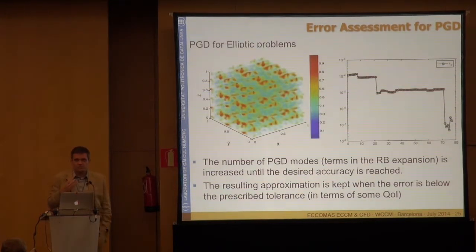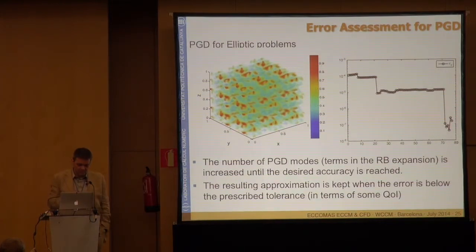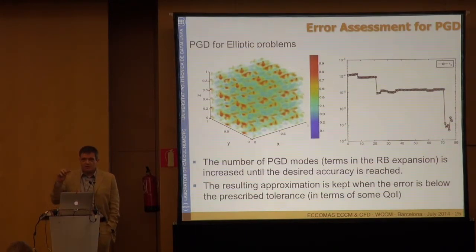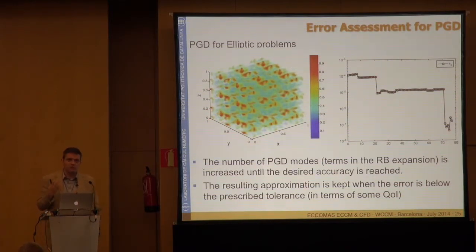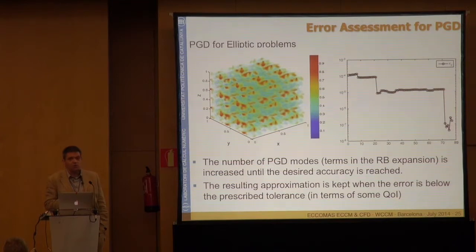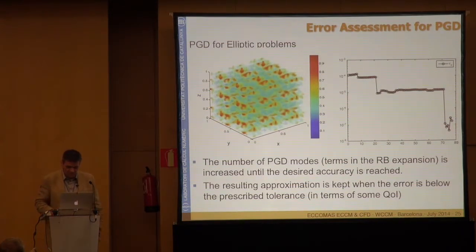A similar approach was already used for PGD in joint work with Paco Chinesta in 2010. We took the dual solution with some extra modes relative to the primal solution, for a problem with separated space dimensions solving a three-dimensional problem. Using the error estimate as a stopping criterion was extremely interesting, because we observed that even though in energy norm the error decreases with each PGD mode added, in terms of a specific quantity of interest, there can be flat zones and jumps — sometimes even getting worse. This is possible because minimization is in energy norm, not in that particular quantity of interest.